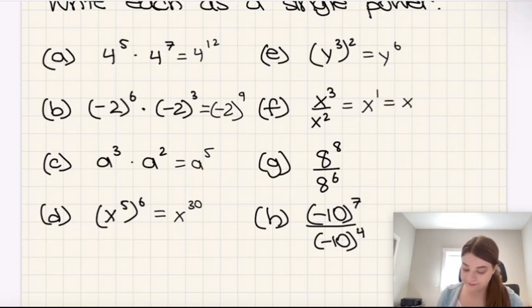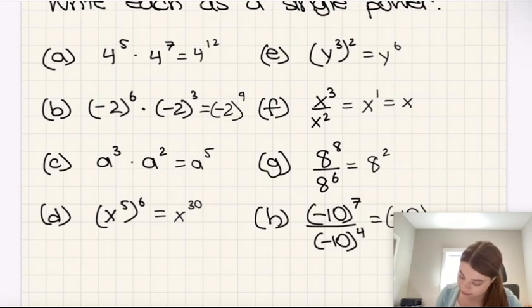Then we have 8 to the power of 8 over 8 to the power of 6. So again, we just subtract the exponents to get 8 squared. And then last but not least, same thing. We have the same base, we need to subtract the exponents to get negative 10 to the power of 3.